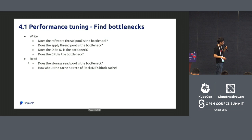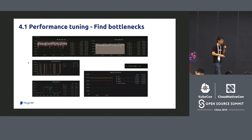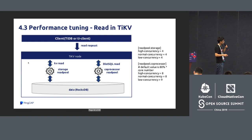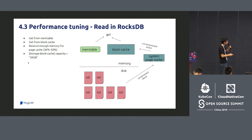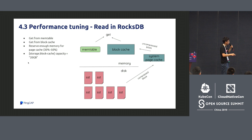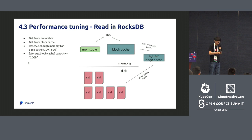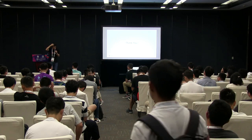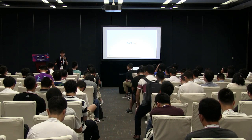RocksDB has a block cache. By adjusting the block cache size you can tune read performance — but you must leave sufficient memory for the system page cache. The read path goes from MemTable to block cache and then reserves memory for the page cache, which stores compressed data that is decompressed on access. Thank you — due to time limits I went through this quickly, but feel free to ask questions after the conference.